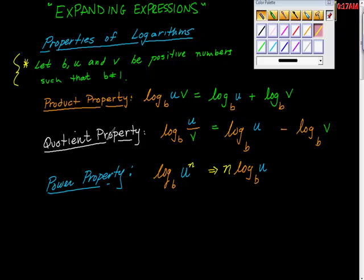The second one is the quotient property which says that log base b of u over v is the same as log base b of u minus log base b of v.